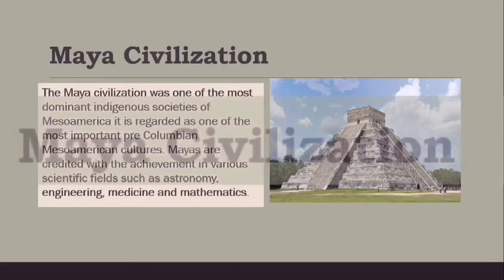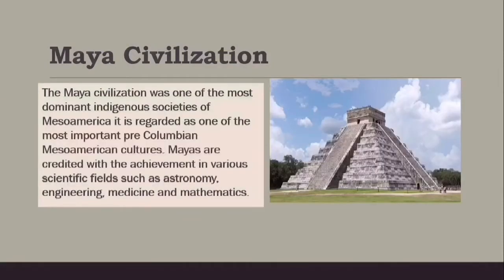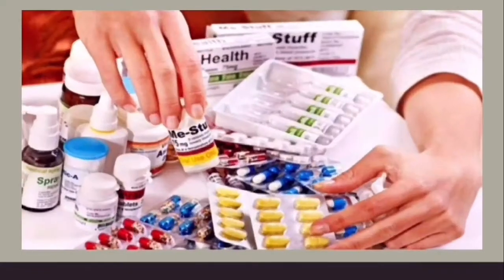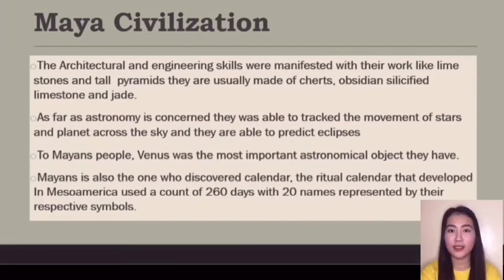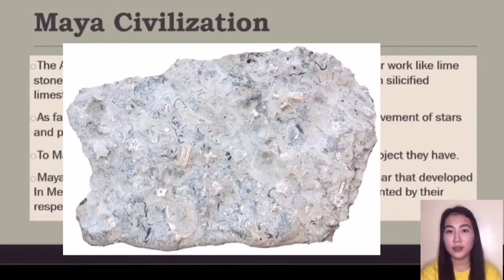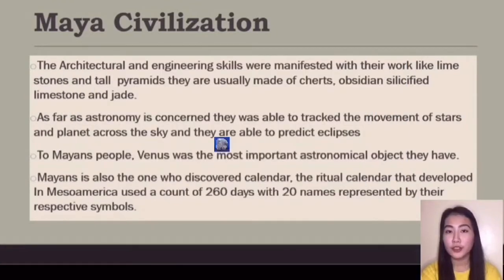Next is the Maya civilization. It is one of the most dominant indigenous societies of Mesoamerica and is regarded as one of the most important pre-Columbian Mesoamerican cultures. The Maya are credited with achievements in various scientific fields such as astronomy, engineering, medicine, and mathematics. Their architectural and engineering skills are evidenced in their work with limestone and tall pyramids.